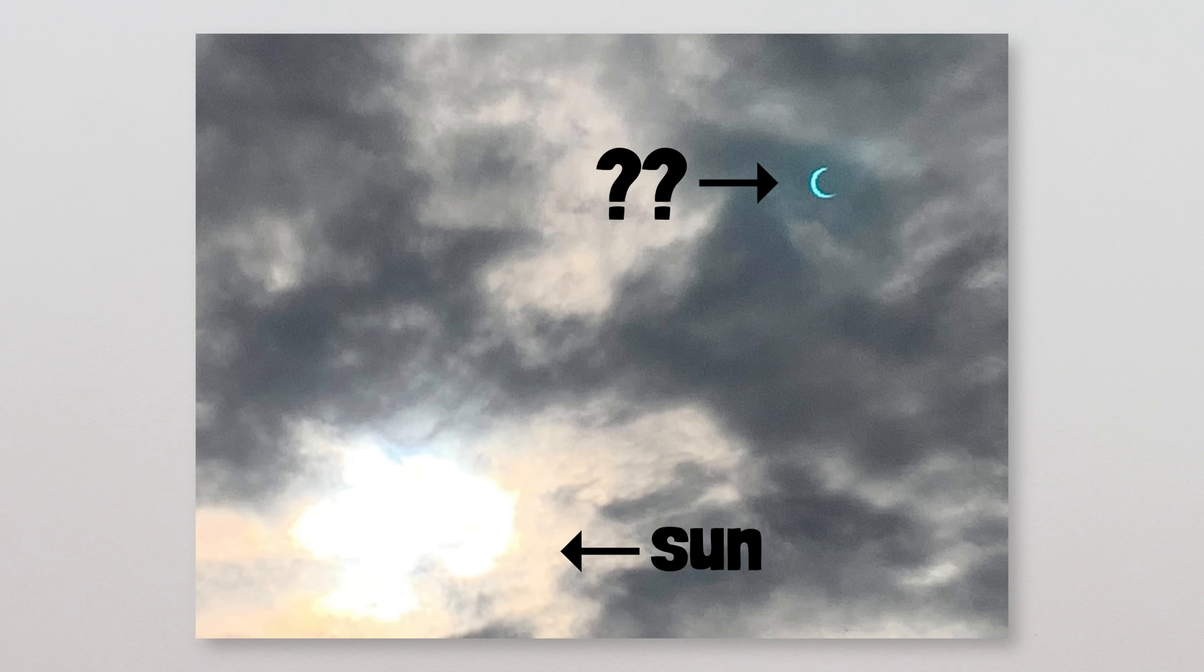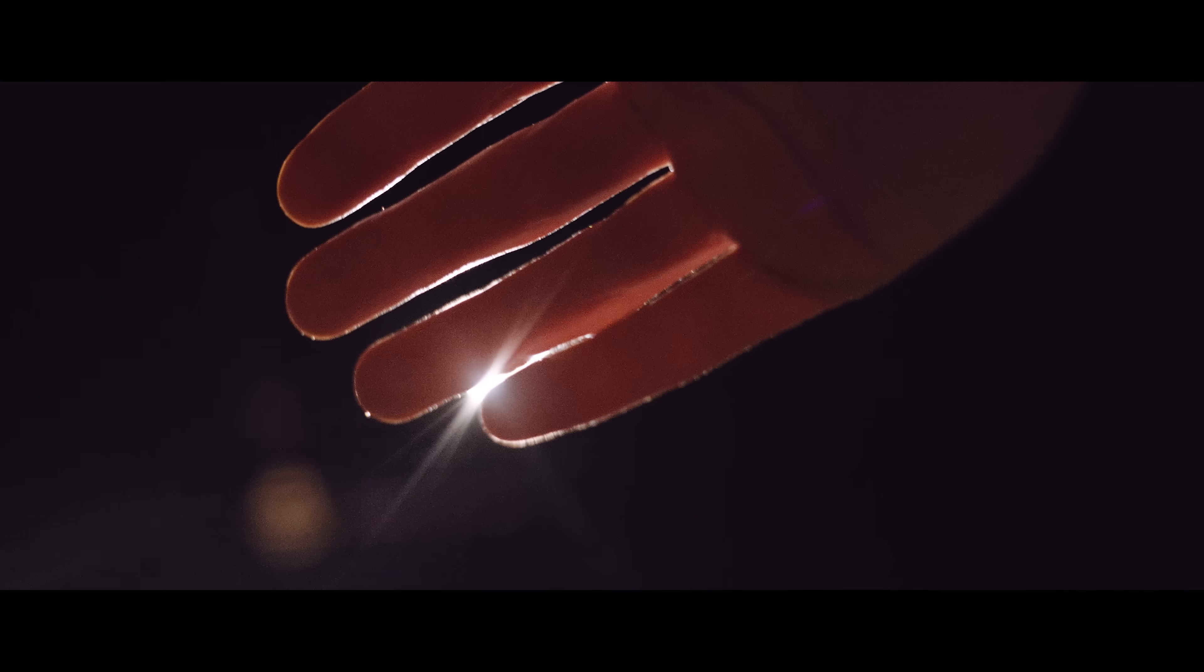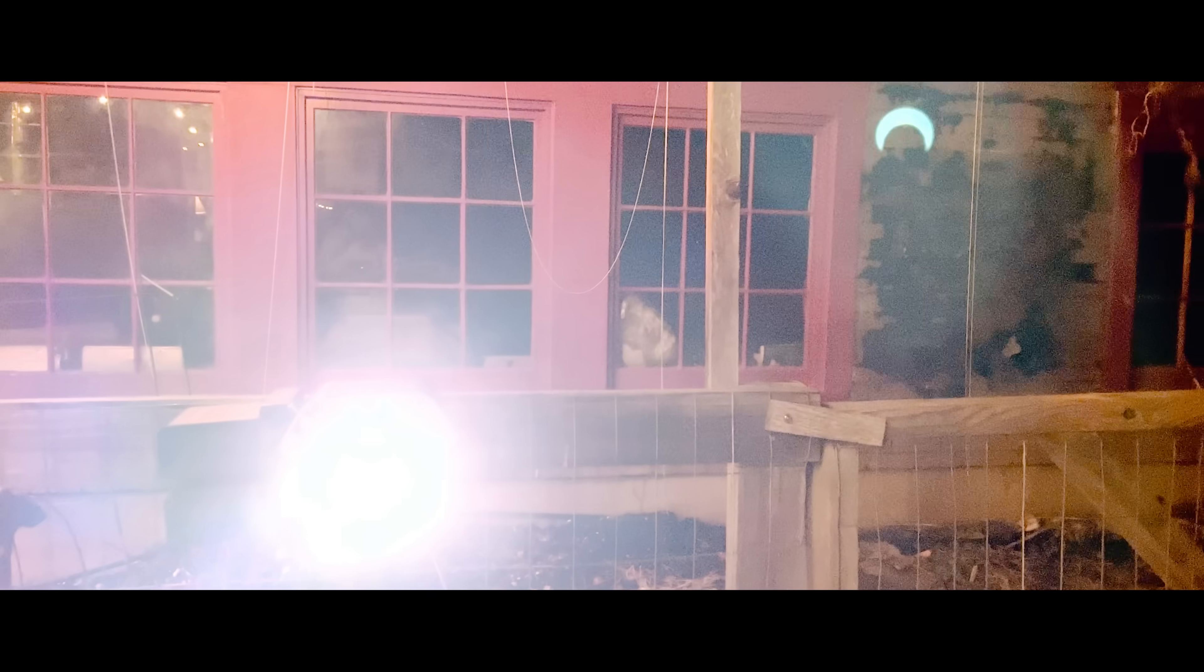The short explanation is that the ghostly eclipse images are lens flares, the thing that happens when you point a camera towards a particularly bright light source and you get a glow, or streaks, or discs, or eclipses.